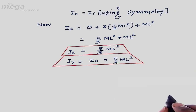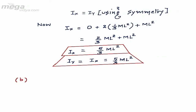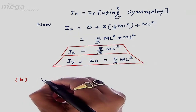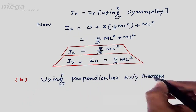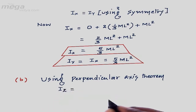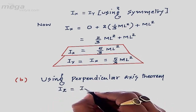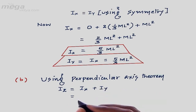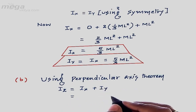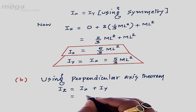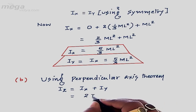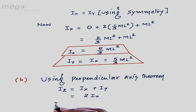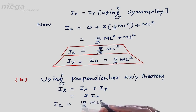Now considering the moment of inertia along the z-axis, it can be calculated using the perpendicular axis theorem. Using the perpendicular axis theorem, Iz equals Ix plus Iy. Since Ix equals Iy, Iz is double the moment of inertia along the x-axis, giving Iz equal to (10/3)ml².